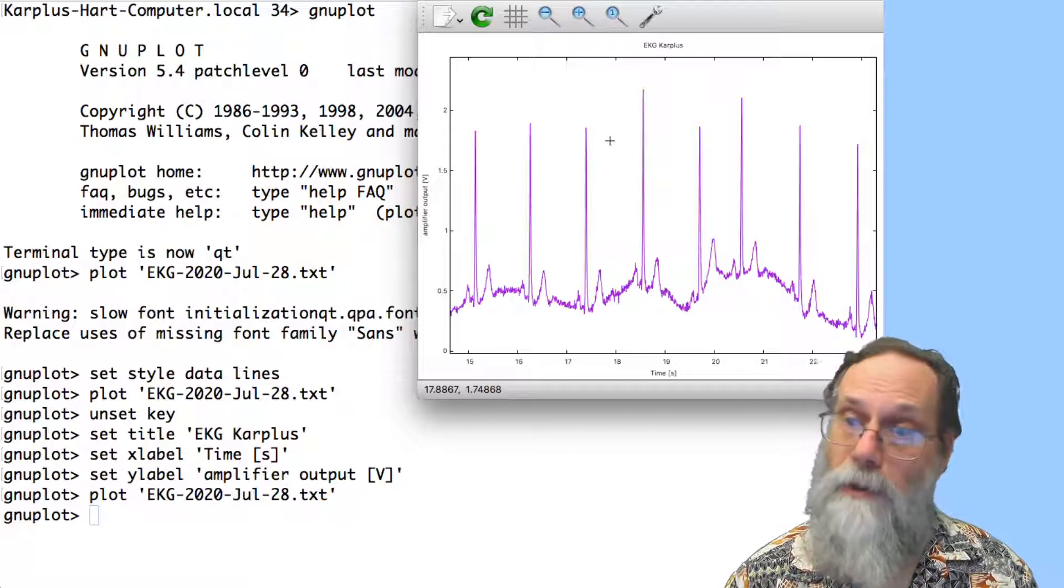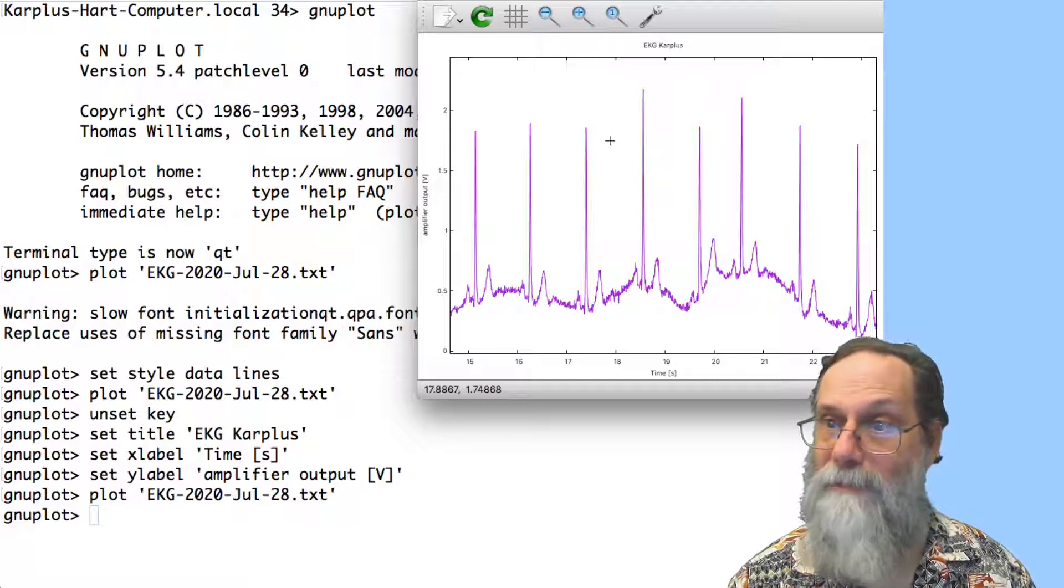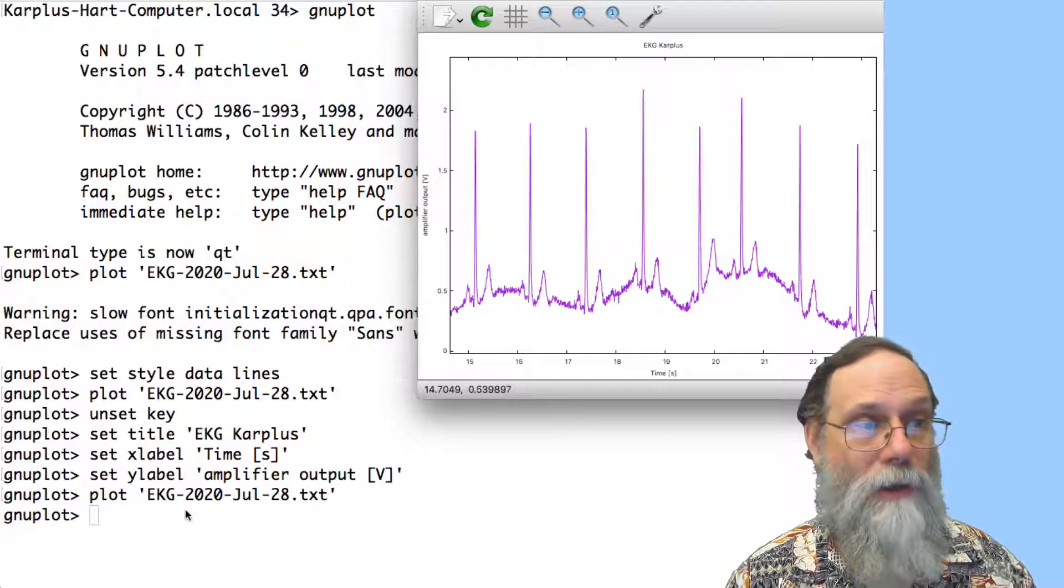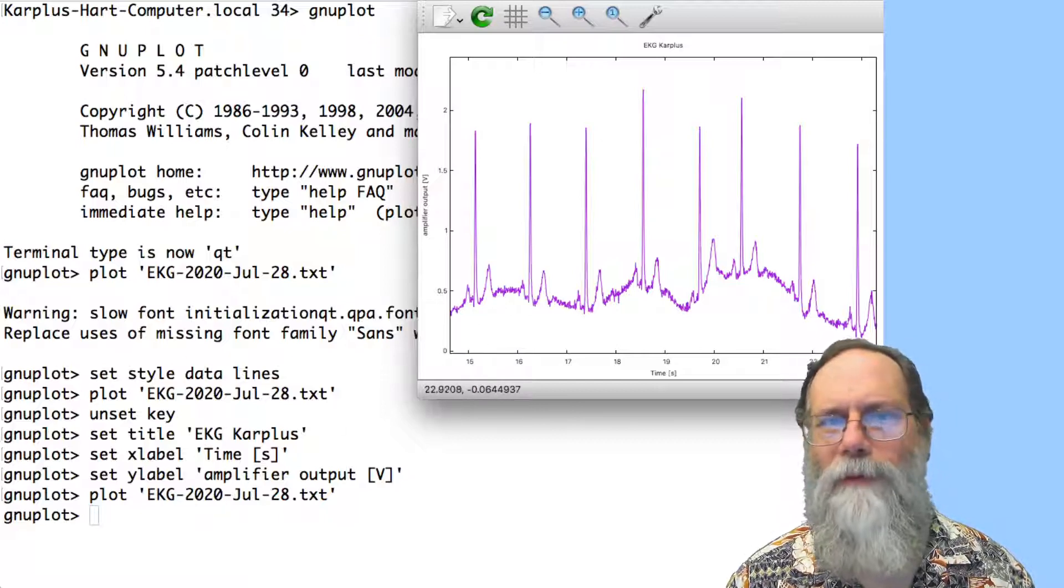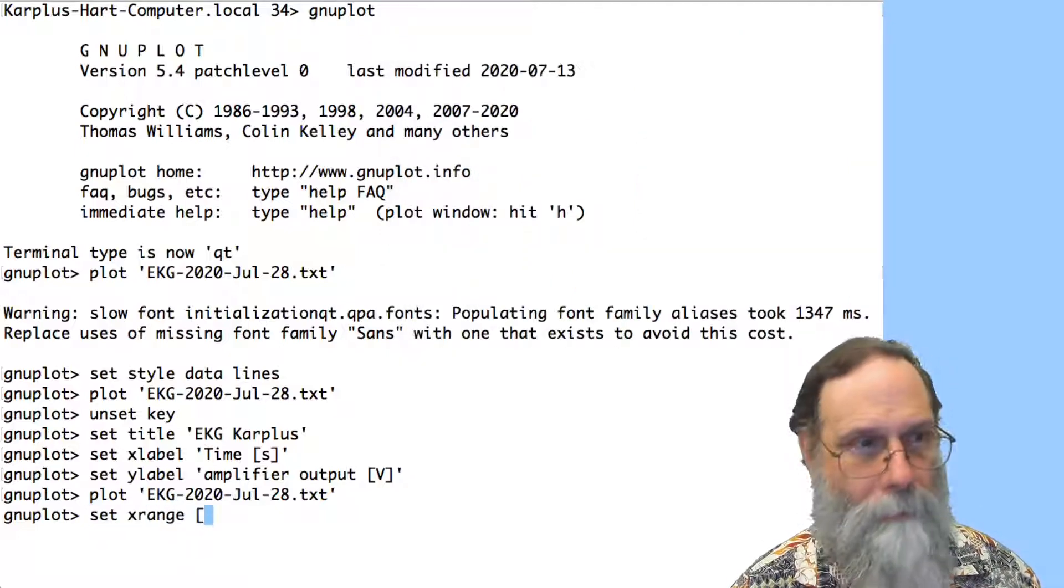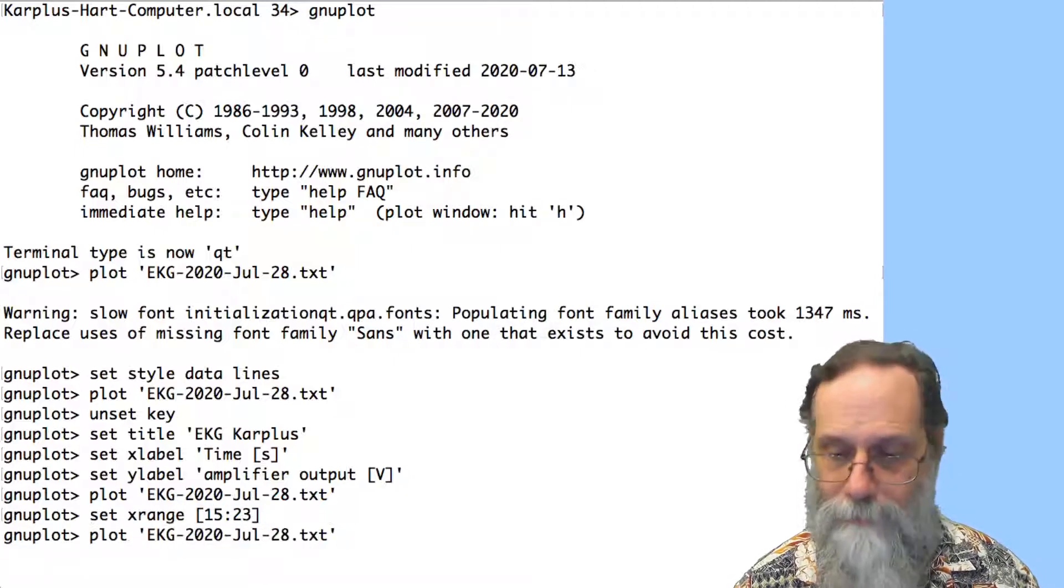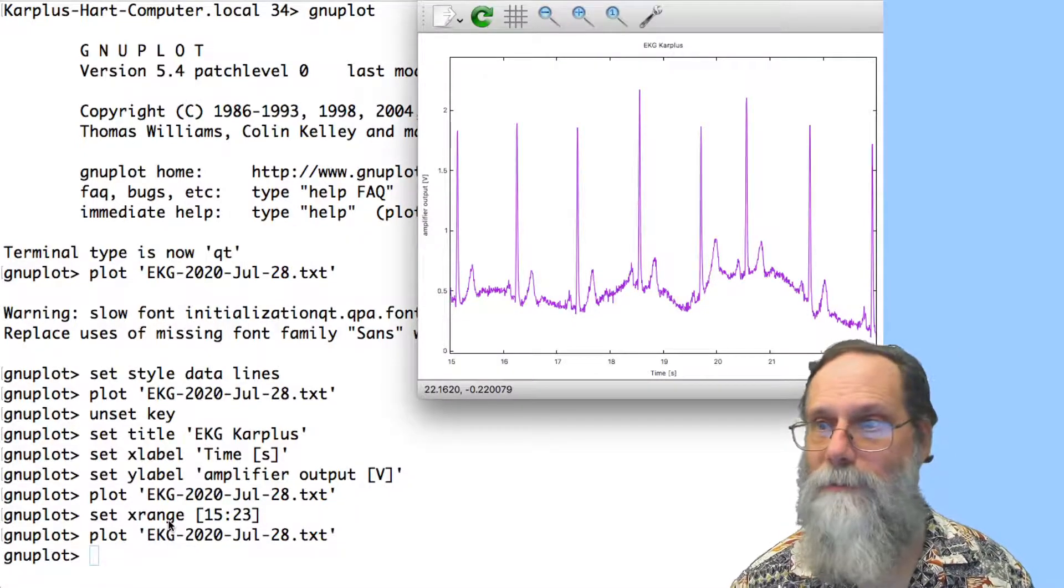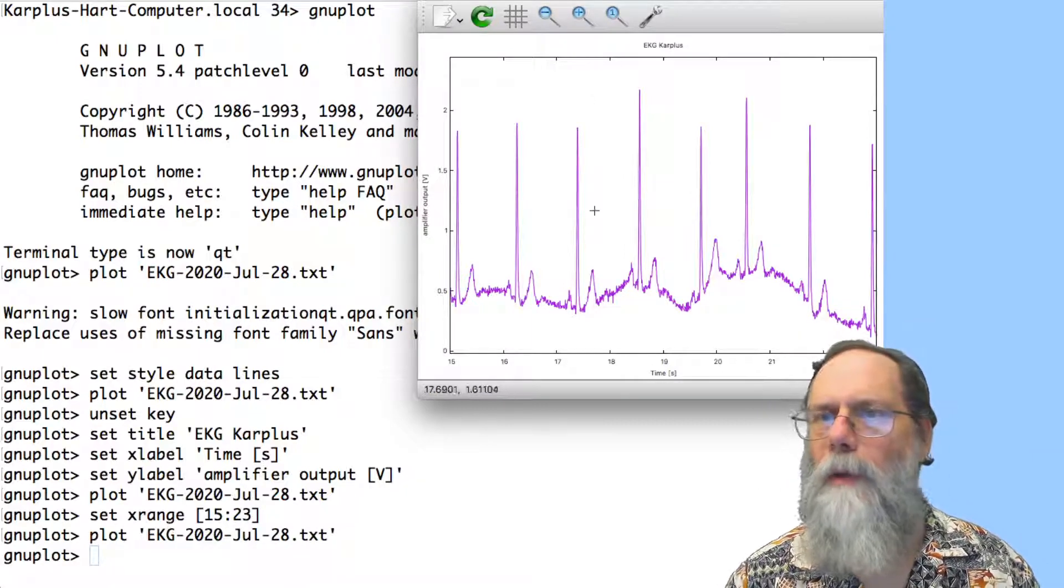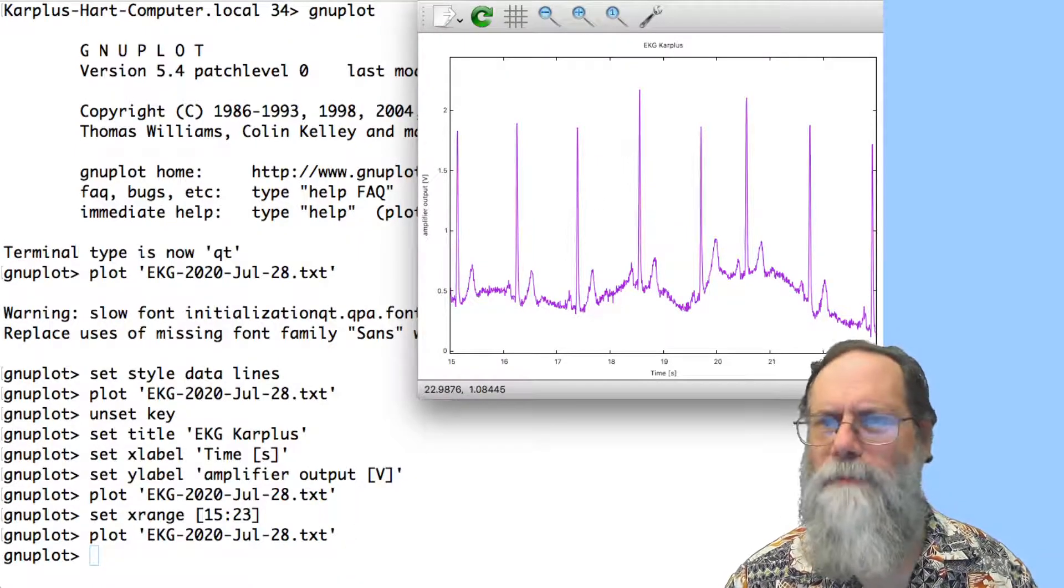That was pretty easy to get to a point where I could see something that looked reasonable. If I was doing a script, though, I can't rely on somebody mousing around to get the x range and the y range right to zoom in correctly. So let's say, maybe I want to go from 15 to 23 seconds. I can go back and say set x range 15 colon 23. If I do the plot, now it's going from 15 to 23. The y range is still being set by whatever I did with that mouse zoom.